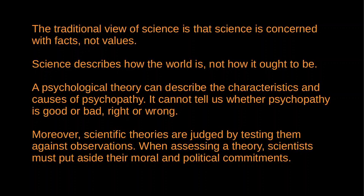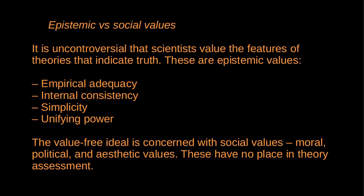That's the common sense view. Let's make this idea more precise. It's worth distinguishing between epistemic and non-epistemic values. Epistemic values are values that indicate truth, and it's generally agreed that epistemic values are going to play a role in science. A standard list will include things like empirical adequacy — that is, the theory correctly describes what we observe and makes the right predictions.